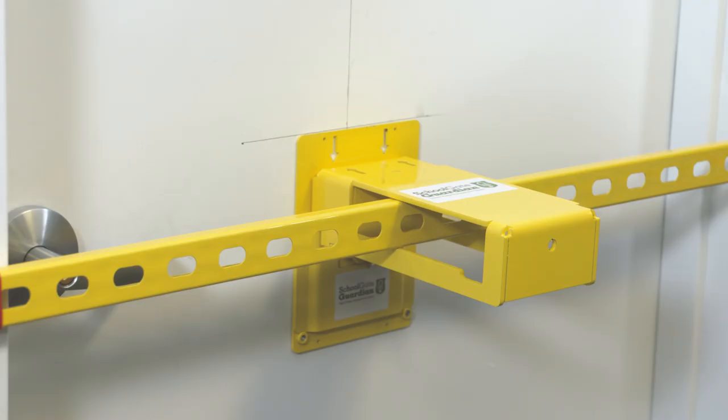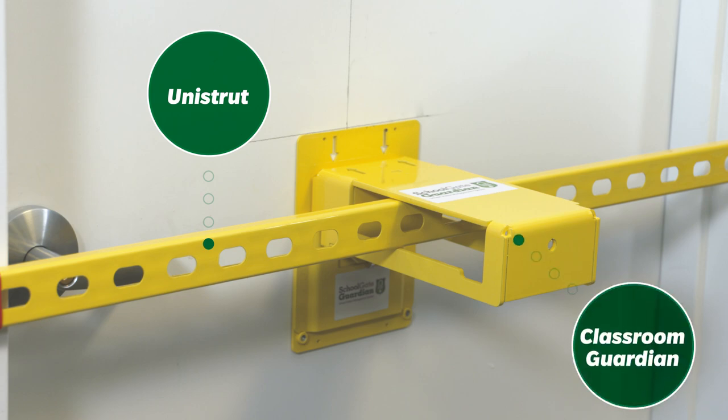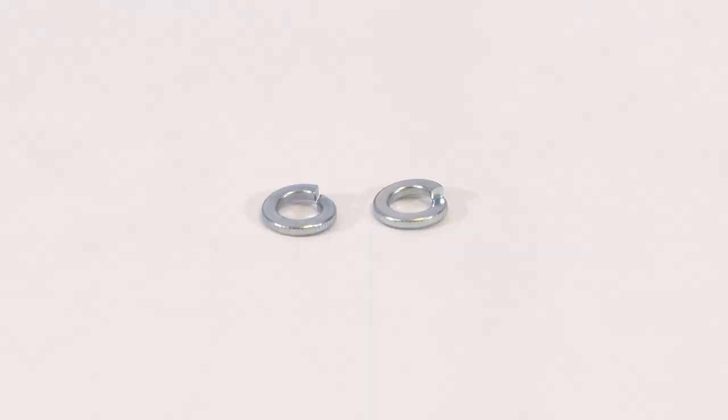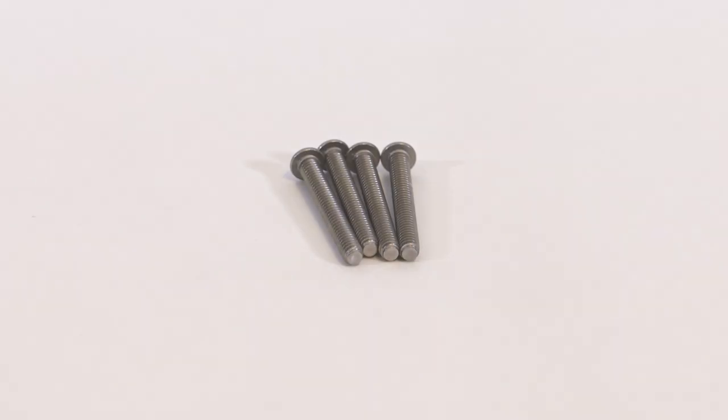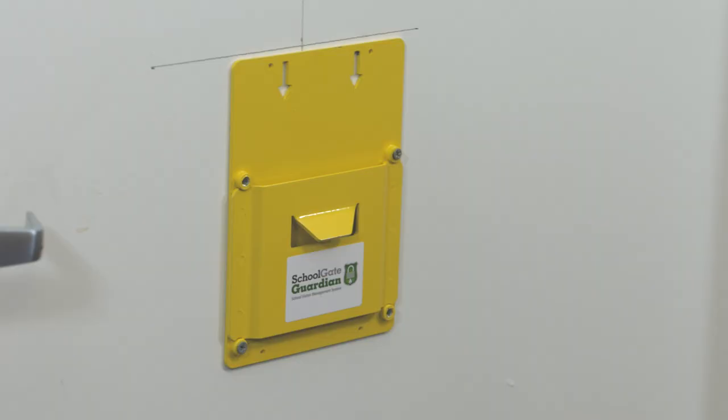The included hardware is 1 Unistrut, 1 Classroom Guardian, 1 Bolt, 2 Lock Washers, 2 Large Washers, 3 Nuts, 4 1⁄4 inch security bolts, and 1 Door Plate.